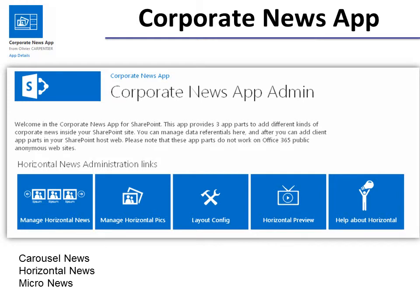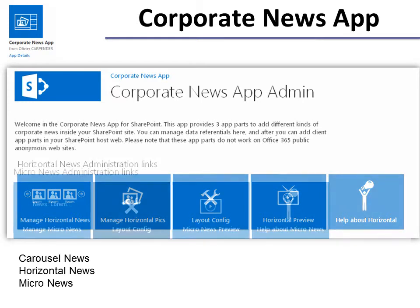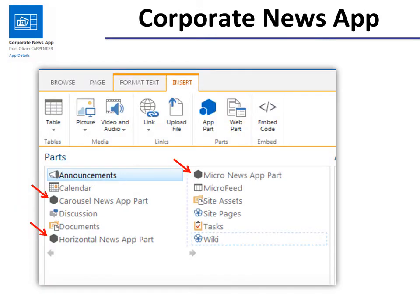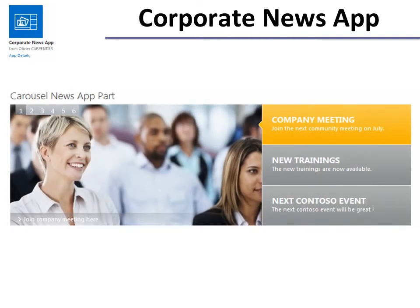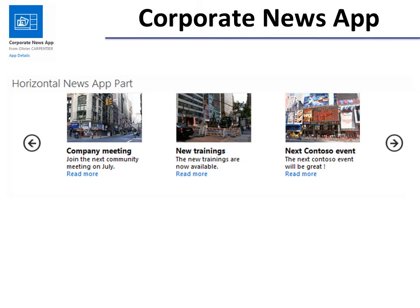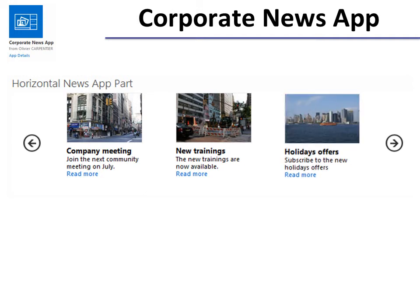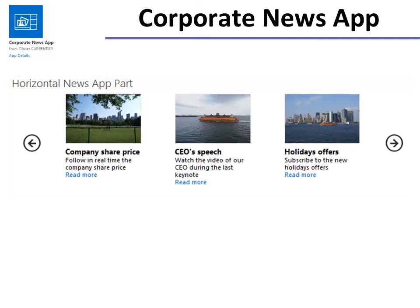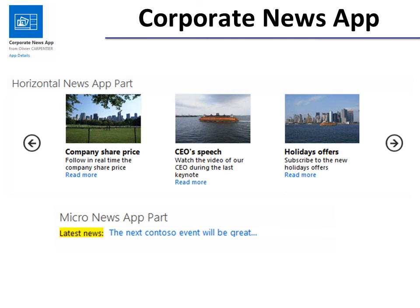Under the same site, you'll also see Horizontal News and Micro News. When you go to put the Corporate News App on your page, you'll have the three options — you would not want all three of them on the page. The Carousel News app part has a picture on the left and headlines on the right, and it will scroll through different pictures and headlines on a regular basis. The Horizontal News app part has smaller thumbnail pictures and will automatically move, or someone can click the arrows to move the horizontal news. The Micro News takes a lot less space — it has headlines and a highlighted word that says 'Latest News,' and it will scroll through the headlines.